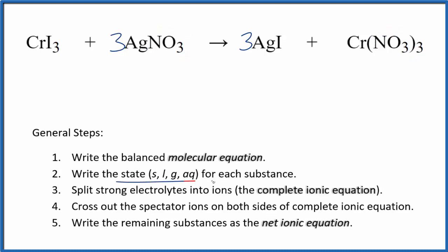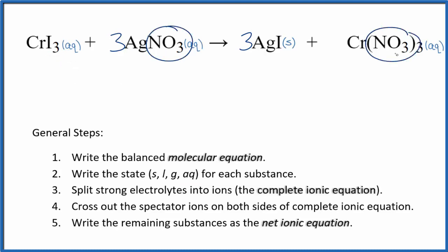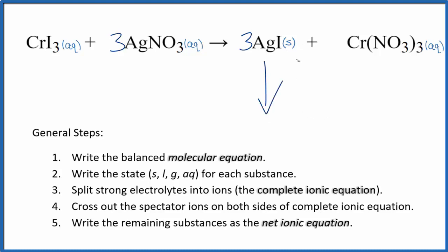Now we need to write the state for each substance. Compounds with the iodide ion in general are soluble. Compounds with the nitrate are also very soluble. But silver compounds most of the time are insoluble — silver nitrate is an exception to that. But AgI, silver iodide, is insoluble. So this is going to be a precipitate; it's going to fall to the bottom of the test tube. So we have our states.